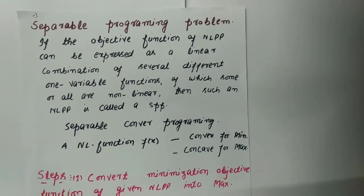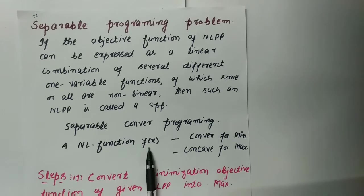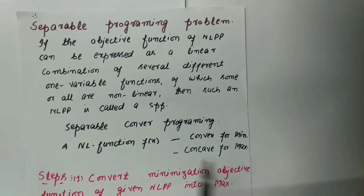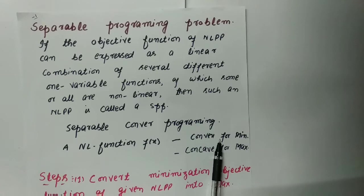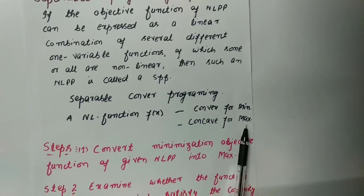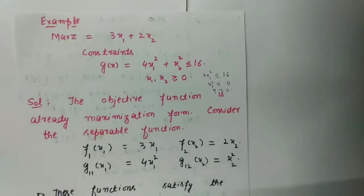Now we discuss two important terms used in this topic: concave and convex. If the nonlinear function f(x) is of minimization type, then we can say that it is convex. And if it is of maximization type, we can say that it is concave. Now let us start with an example.